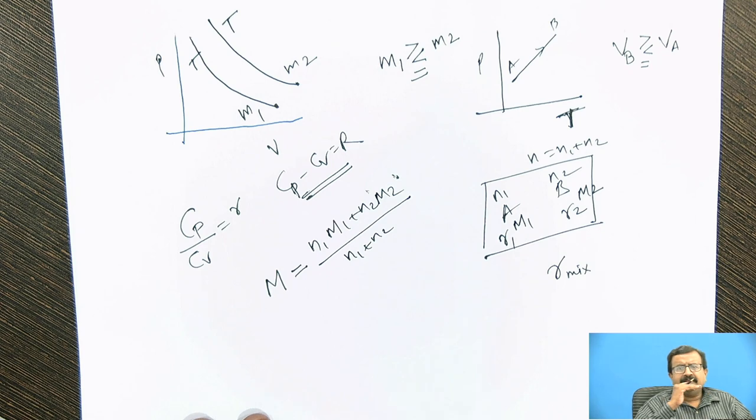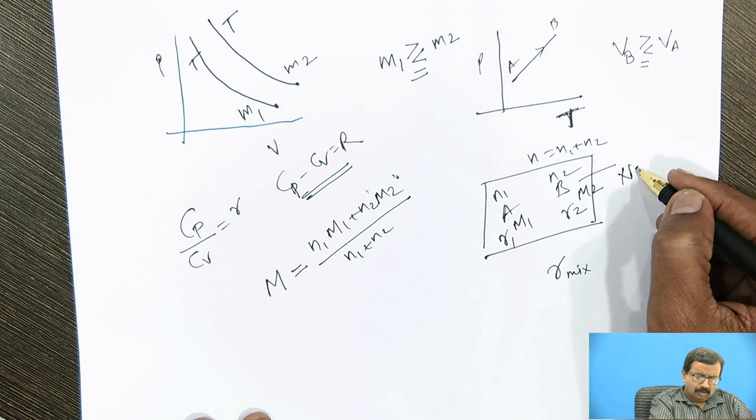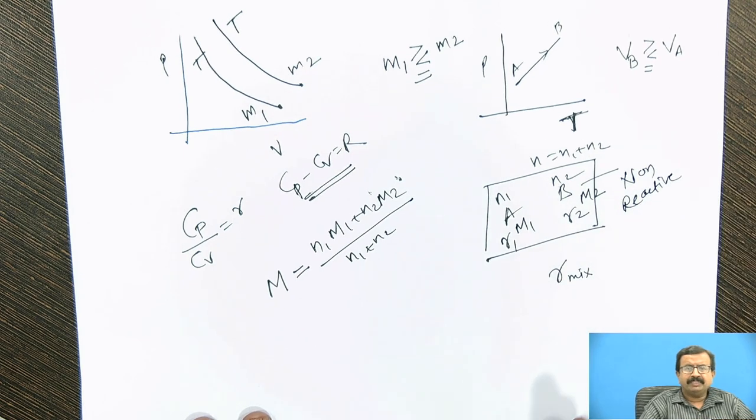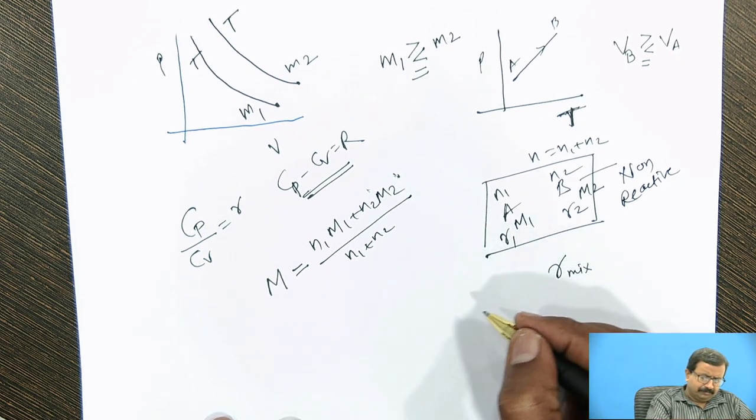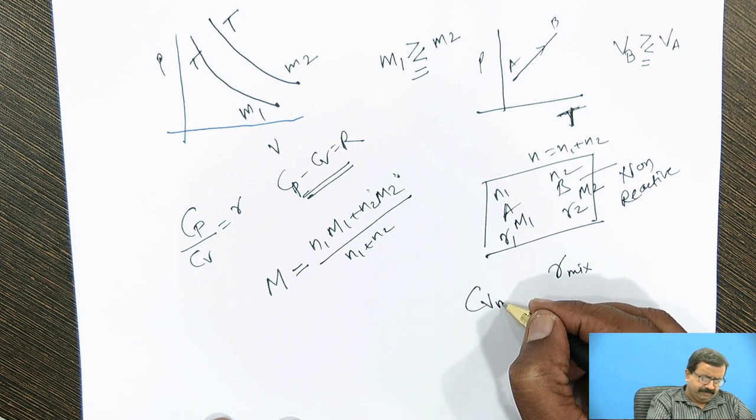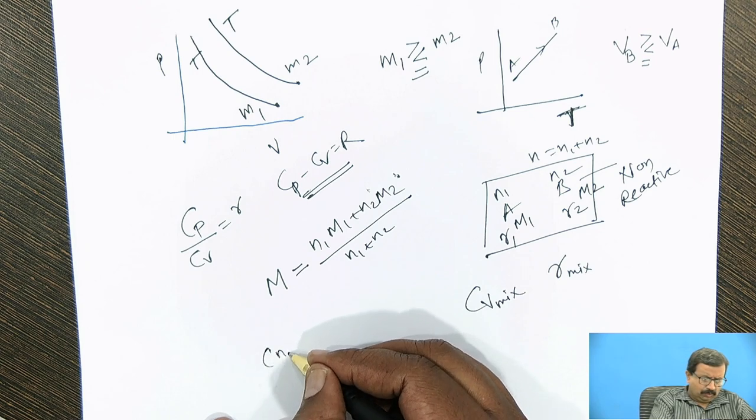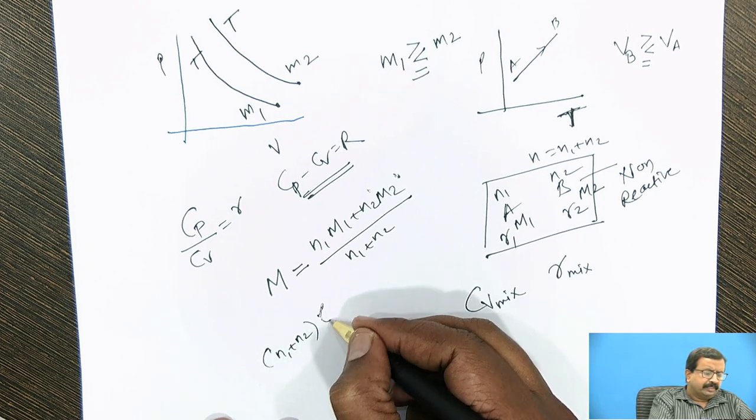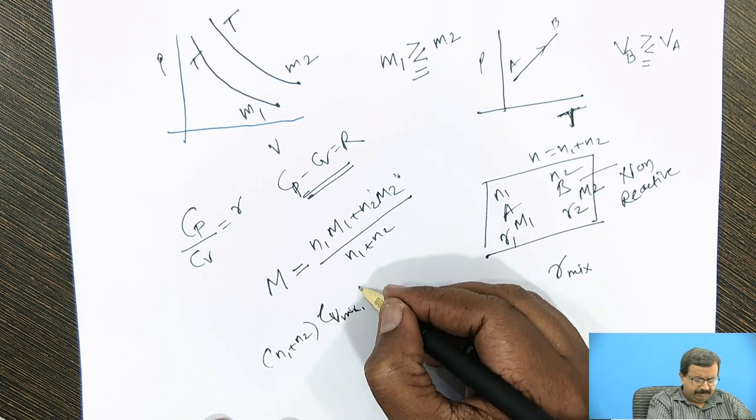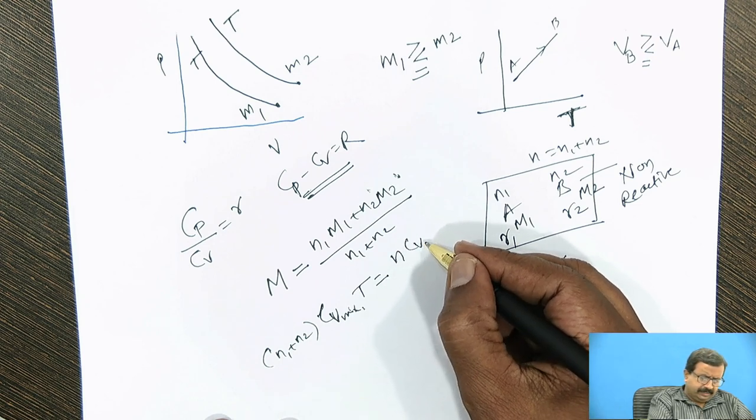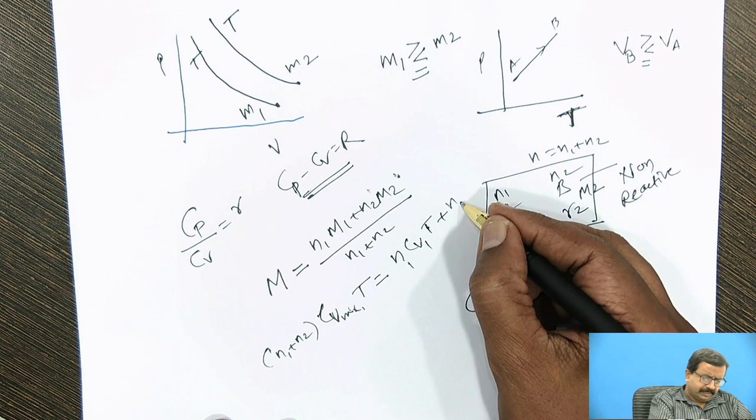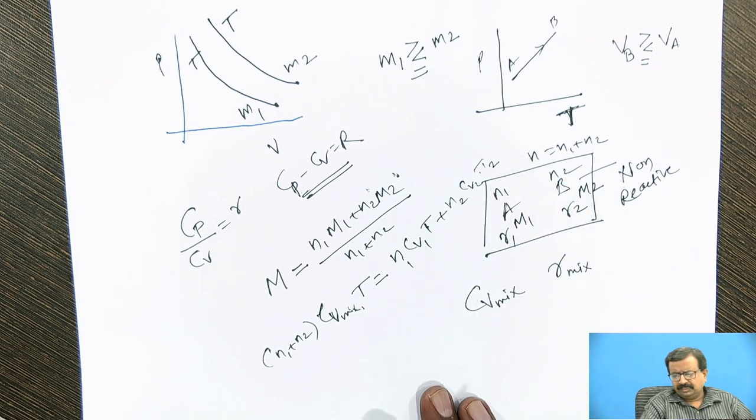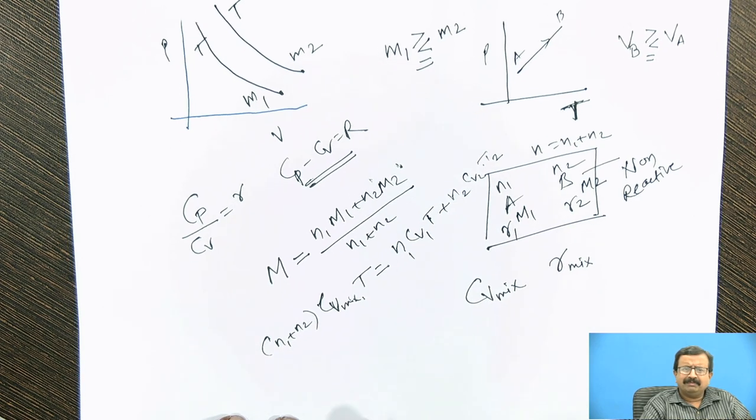From thermodynamics point of view, whatever heat I have supplied to gas A, whatever heat I have supplied to gas B, must be equal to total heat supplied to the composite. One thing is there: this mixture is non-reactive. So suppose I assume that the specific heat of the mixture is Cv_mix. Then I know that total number of moles are N1 plus N2. Then Cv of mixture times temperature rise T must equal N1Cv1 times T plus N2Cv2 times T. So this is my simple equation from the first law of thermodynamics or the simple principle of energy conservation.